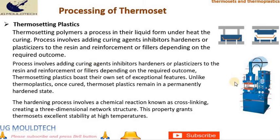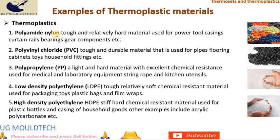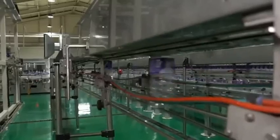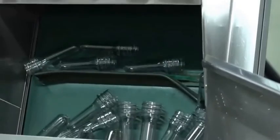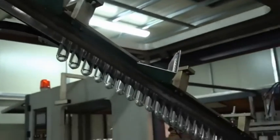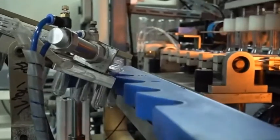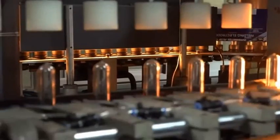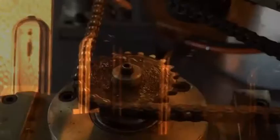Examples of thermoplastic materials include: 1. Polyamide (Nylon) — tough and relatively hard, used for power tool casings, curtain rails, bearings, and gear components. 2. Polyvinyl chloride (PVC) — tough and durable, used for pipes, flooring, cabinets, toys, and household fittings. 3. Polypropylene — light and hard with excellent chemical resistance, used for medical and laboratory equipment, string, rope, and kitchen utensils. 4. Low-density polyethylene (LDPE) — tough, relatively soft, and chemical resistant, used for packaging, toys, plastic bags, and film wraps. 5. High-density polyethylene (HDPE) — stiff, hard, and chemical resistant, used for plastic bottles and casings of household goods. Other examples include acrylic and polycarbonate.